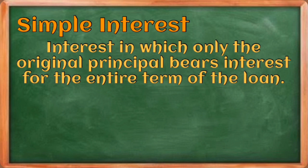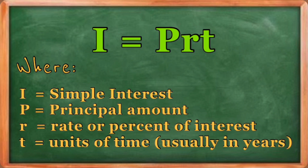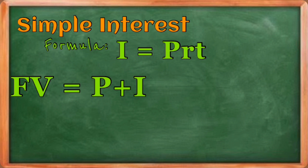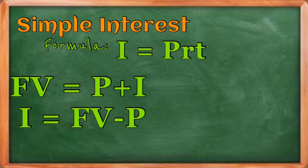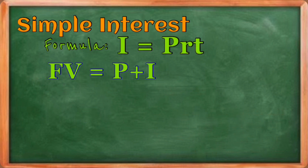Simple interest is the type of interest in which only the original principal bears interest for the entire term of the loan. The formula is I = PRT, where I is the simple interest, P is the principal, R is the rate, and T is the time — usually expressed in years. If you want to find the final value, add the principal and interest. If the final value is given and you want to find interest, just subtract the principal from it.